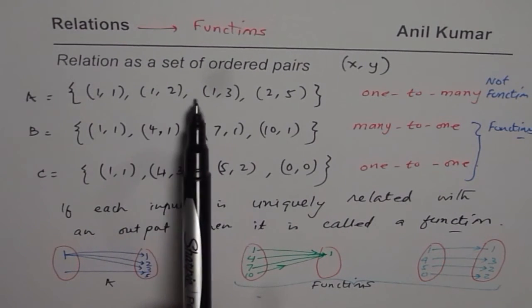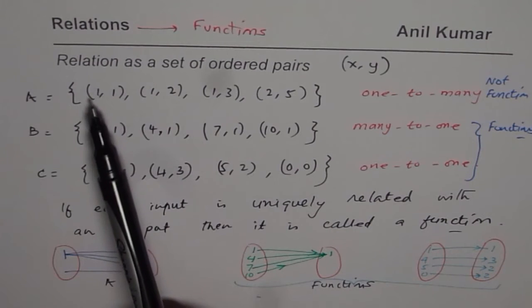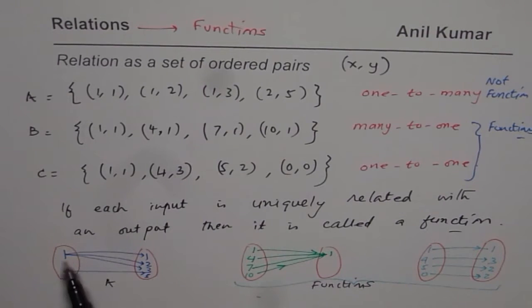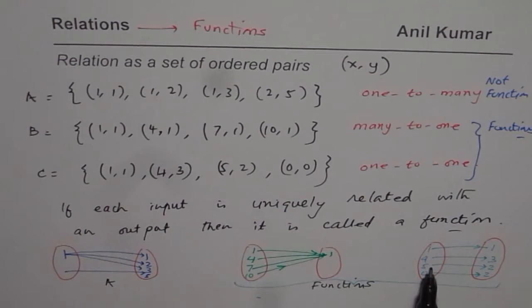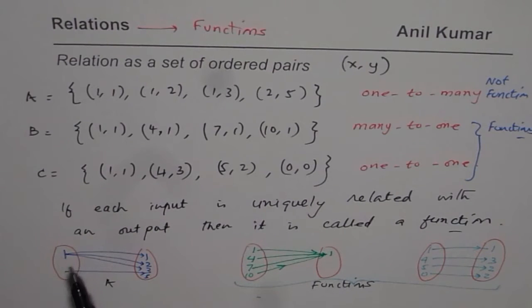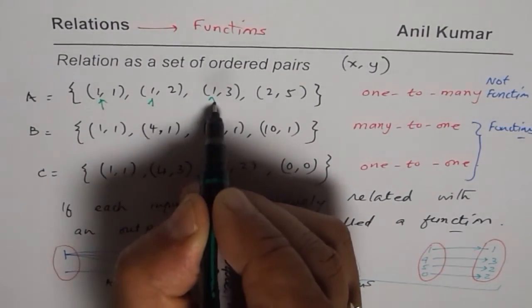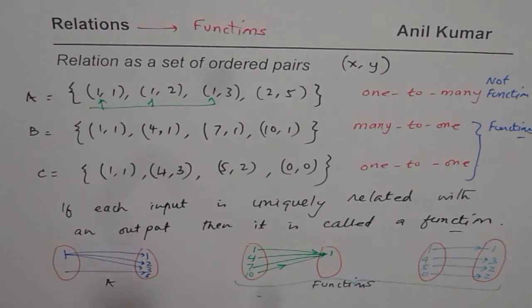An easy way: check the inputs. If you have more than one link from one input, then it is not a function. Also check domain and range — if you have fewer elements in the domain than in the range, then it is definitely not a function. If inputs repeat, as in relation A, it is not a function. But output can repeat — that is fine. I hope it is clear. Thank you and all the best.